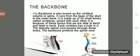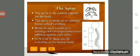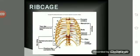The backbone is also known as the vertebral column or spine. It runs from the base of the skull to the lower back and is made up of 33 small bones called vertebrae. It allows us to bend and twist our back. Each vertebra has a hole through which the delicate spinal cord passes. Between each vertebra is cartilage which keeps bones from rubbing against each other. Fun fact: there are 26 vertebrae in the human body.